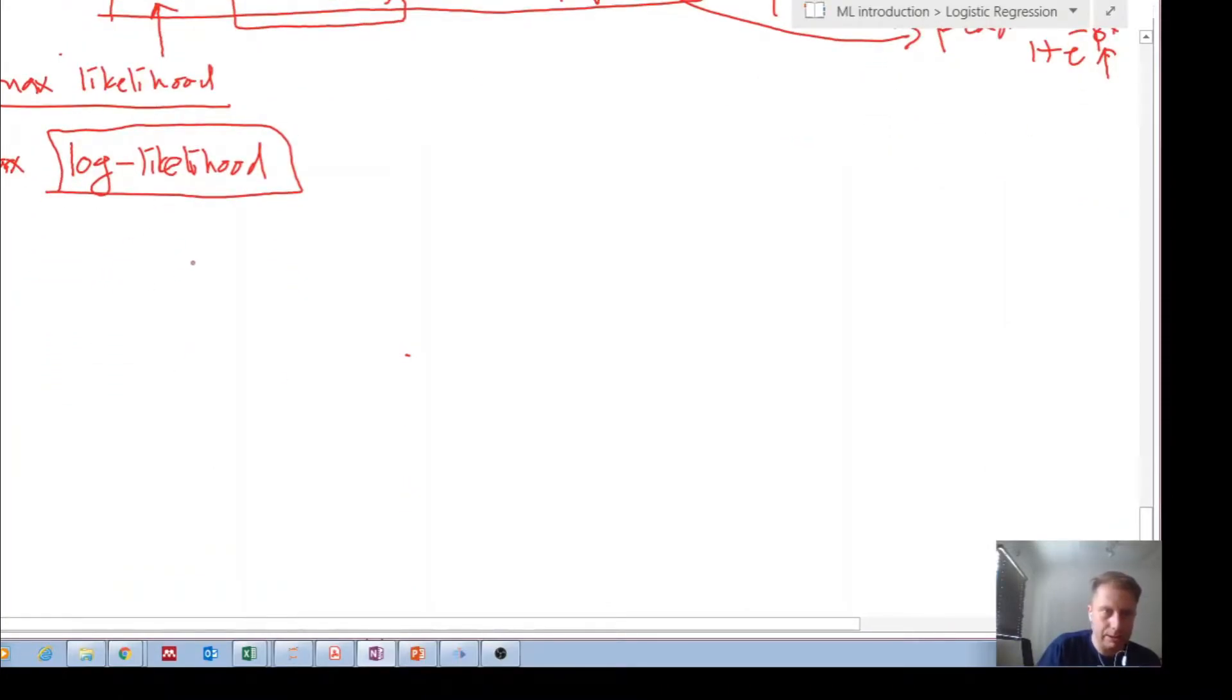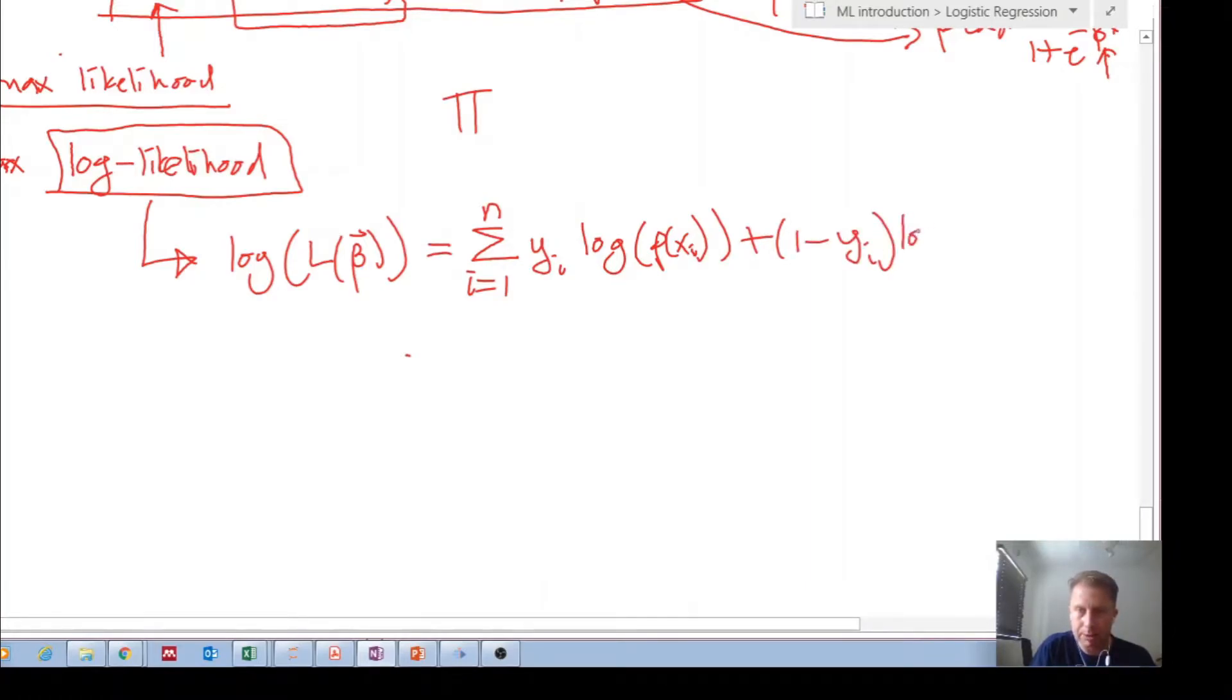Okay, if you do this, so the log likelihood then becomes, I'm just going to write the log of L(β) is then equal to, remember the pi which refers to multiplying each term, now this becomes because we're logging it, if that's the right word, I don't think it's the right word, it becomes a summation i equals 1 to n of yi log of the probability of xi plus one minus yi times the log of one minus the probability of xi.